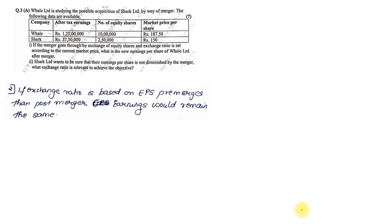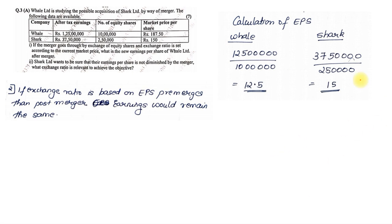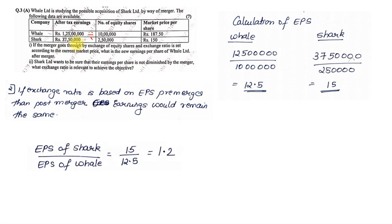First we need to find the EPS of both companies. The formula is NPAT divided by number of shares. For Whale: 1 crore 25 lakhs divided by 10 lakh = 12.5 rupees per share. For Shark: 37 lakh 50,000 divided by 2 lakh 50,000 = 15 rupees per share. Once we have the earnings per share for both companies, we can find the exchange ratio based on pre-merger EPS.